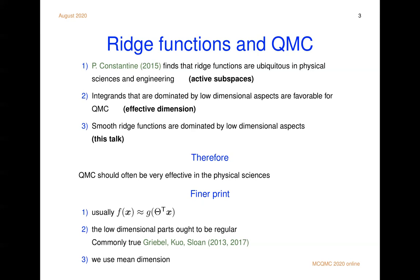Integrands that are dominated by their low dimensional aspects are very favorable for quasi Monte Carlo. In this talk, what I want to show you is that smooth ridge functions are dominated by low dimensional aspects. Putting that all together means quasi Monte Carlo should generally be really quite effective in physical science problems. Many of those problems are really trying to optimize their function or approximate it or do something else. But integration is a pretty fundamental task. So there should be lots of good use cases for randomized and unrandomized quasi Monte Carlo in the physical sciences.